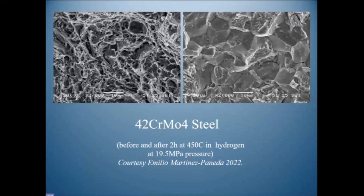After being loaded with hydrogen, properties fall — we have hydrogen embrittlement on one side. Before hydrogen, this is the material as it was. This is from Emilio's work — how do we explain these features: what appears to be cleavage surfaces and intergranular failure?